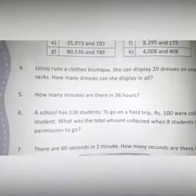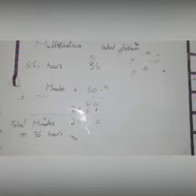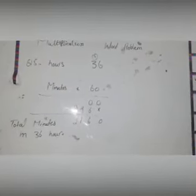Now question number 5: How many minutes are there in 36 hours? Look at here. You have 36 hours and every hour has 60 minutes, so you will multiply 60 by 36.